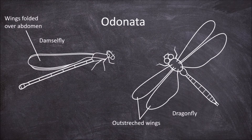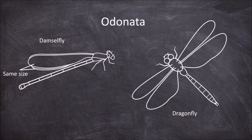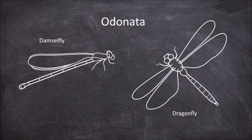In addition to these two features there are a few more that can help distinguish the two groups. The first of these is the shape of the wings. In damselflies both the fore and hind wings are similar in shape and size. In dragonflies the hind wings are larger than the fore wings and have an enlarged anal lobe. The next defining feature is in their body shapes.